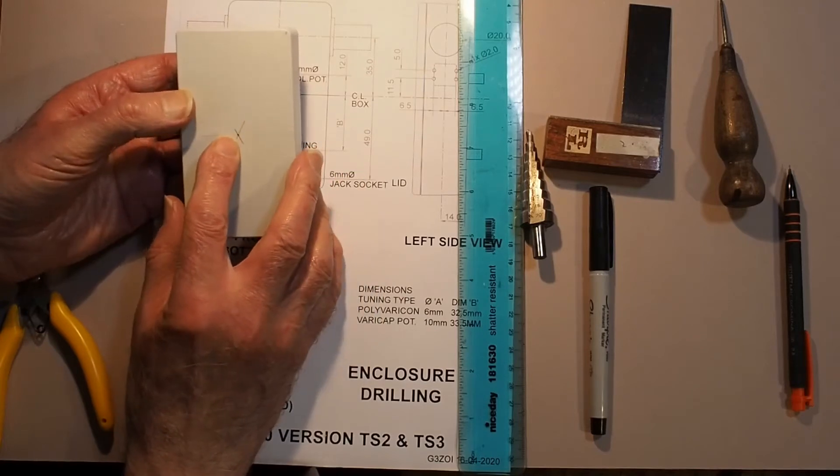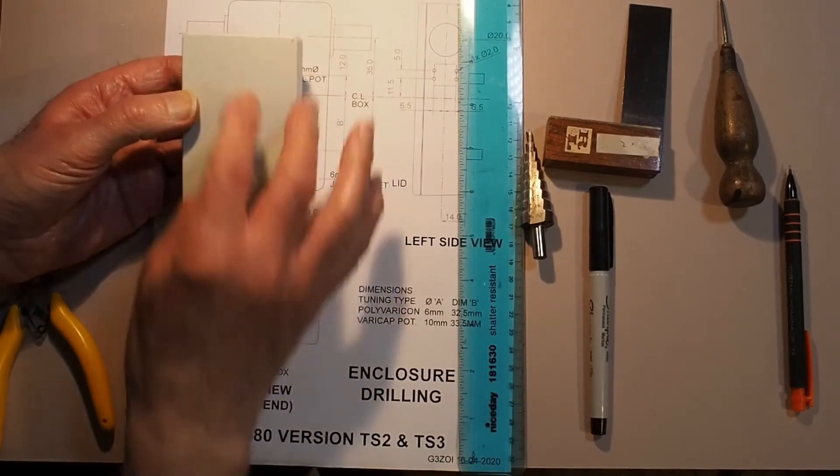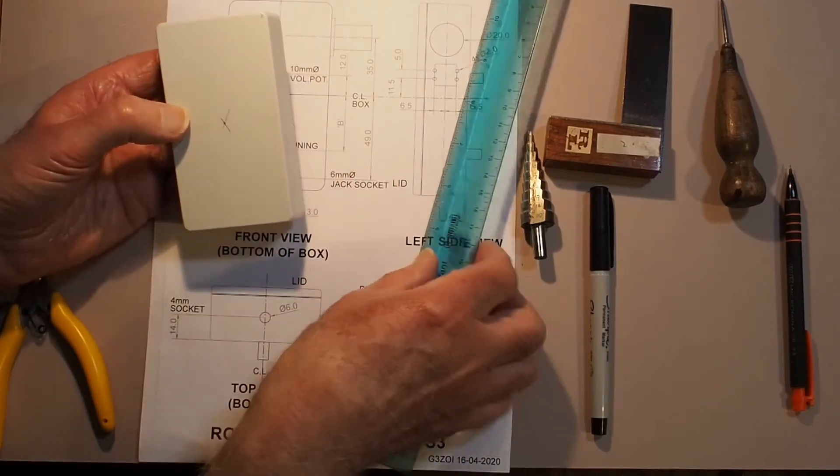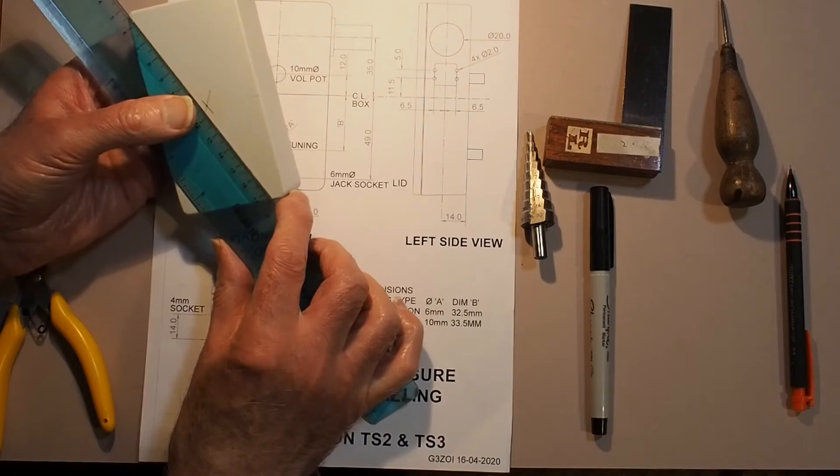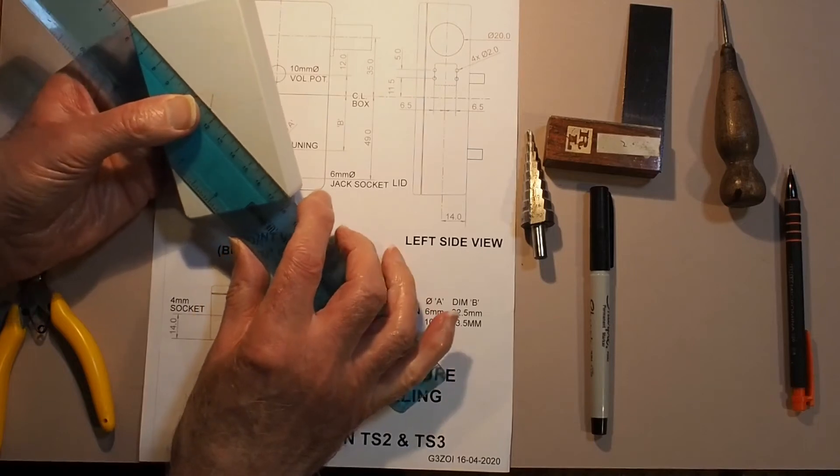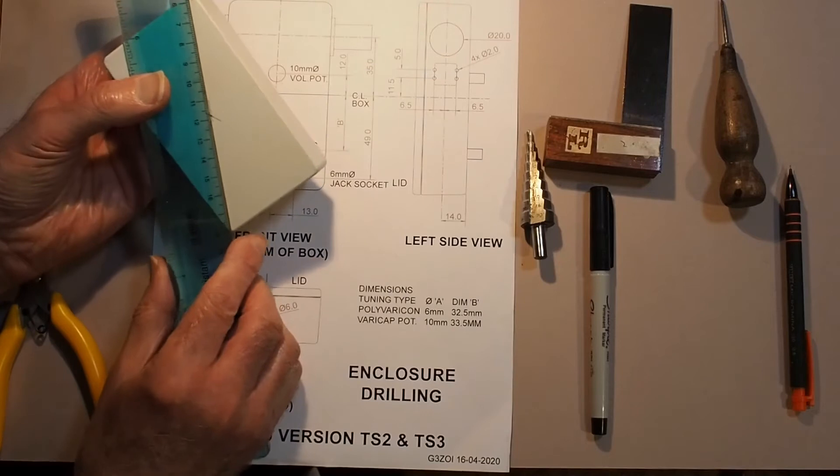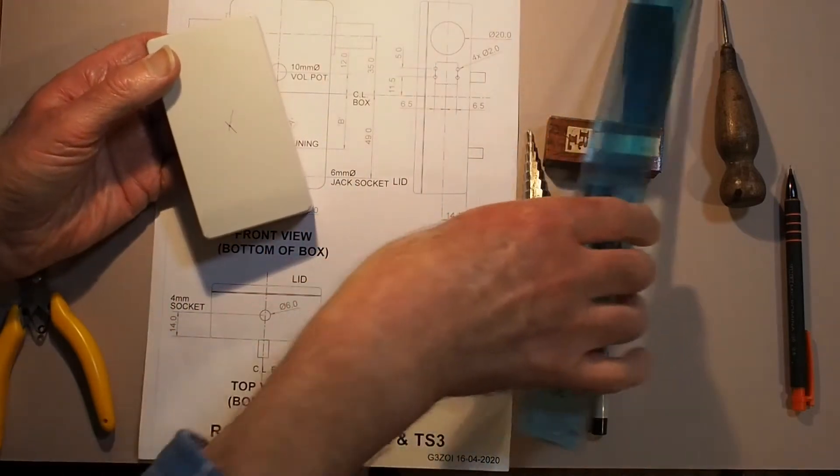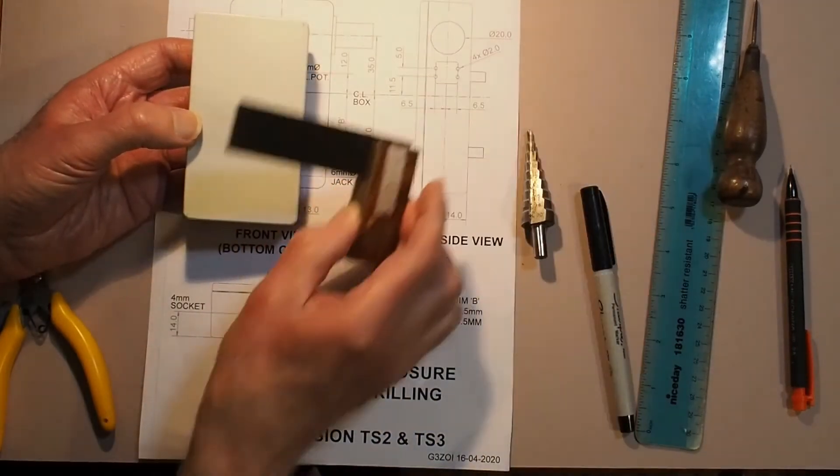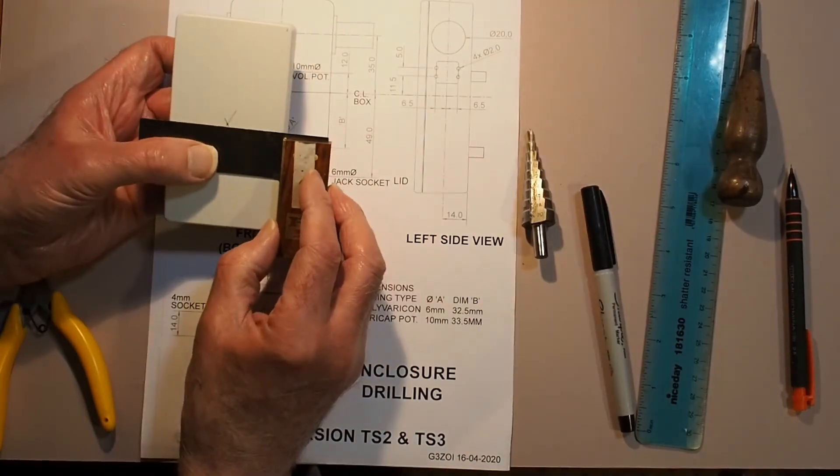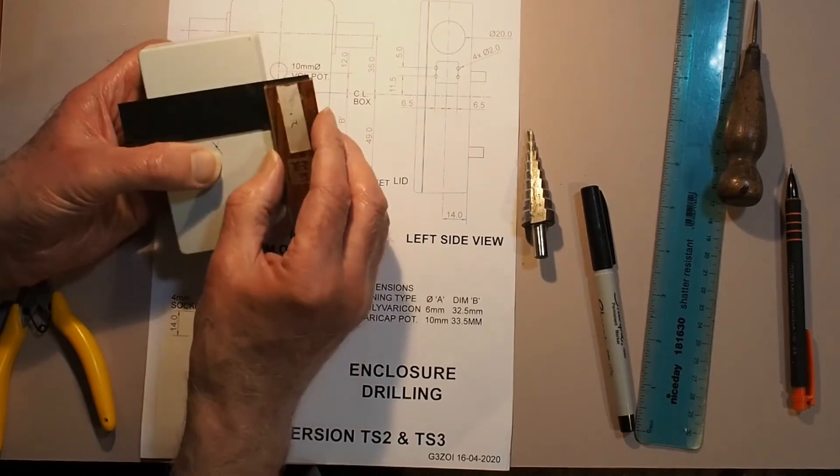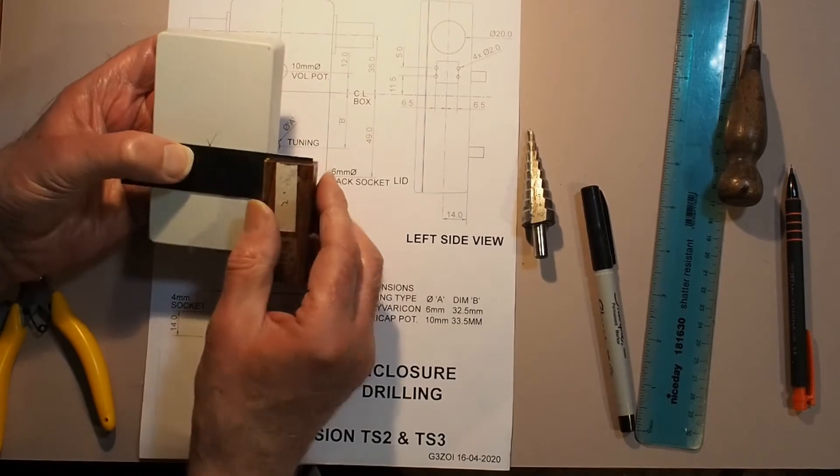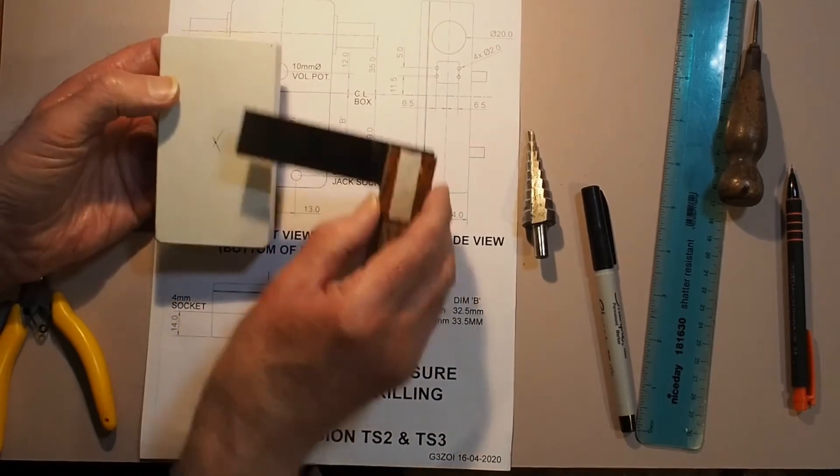First of all you need to locate the center. You can just do it by measuring and halving the height and the length, or another quick way is to find the center by drawing some diagonals from the corners. Once you've done that, you can then set out all the positions of your holes using your set square and measuring off the center lines of the box.